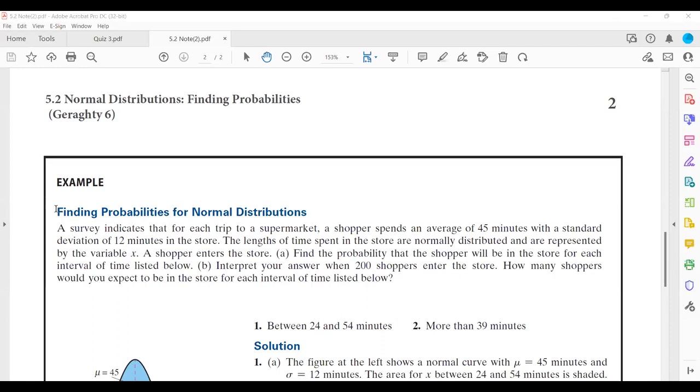As you can see, we have a survey. You just ran a survey at this station. A shopper spends an average of 45 minutes, and another keyword is the standard deviation of 12 minutes in the store. The length of time spent in the store is normally distributed, represented by x-values.